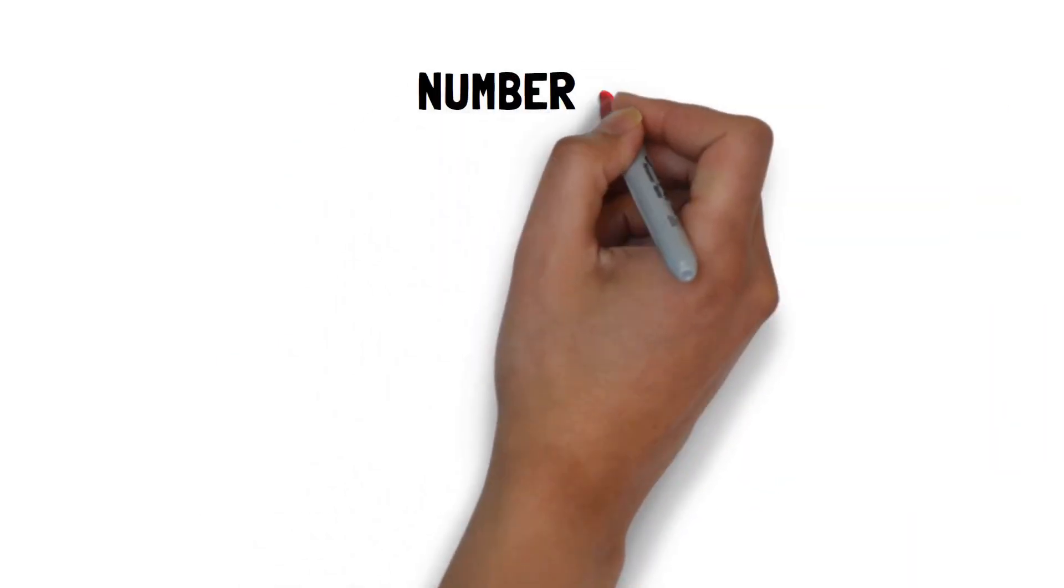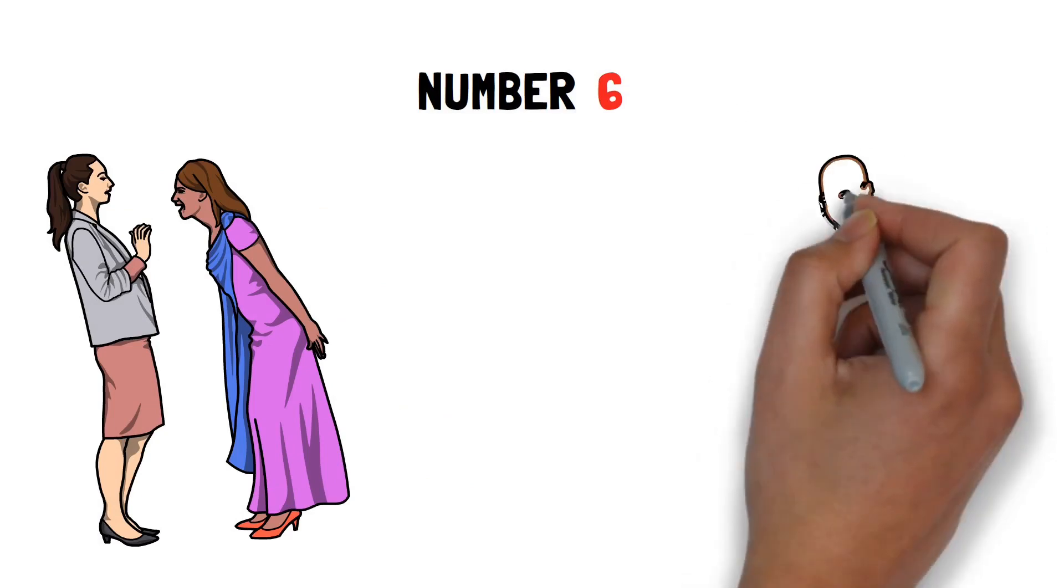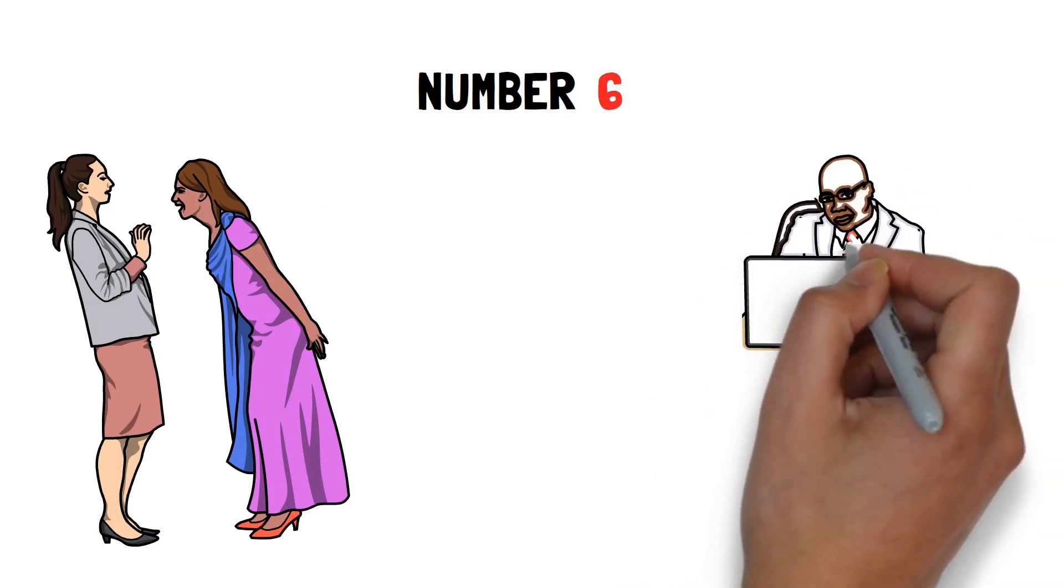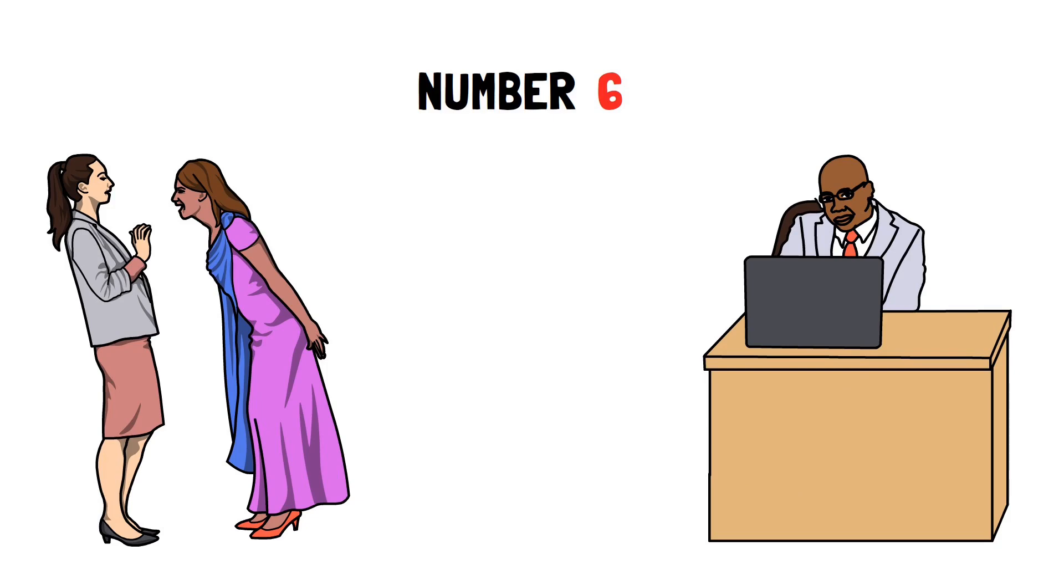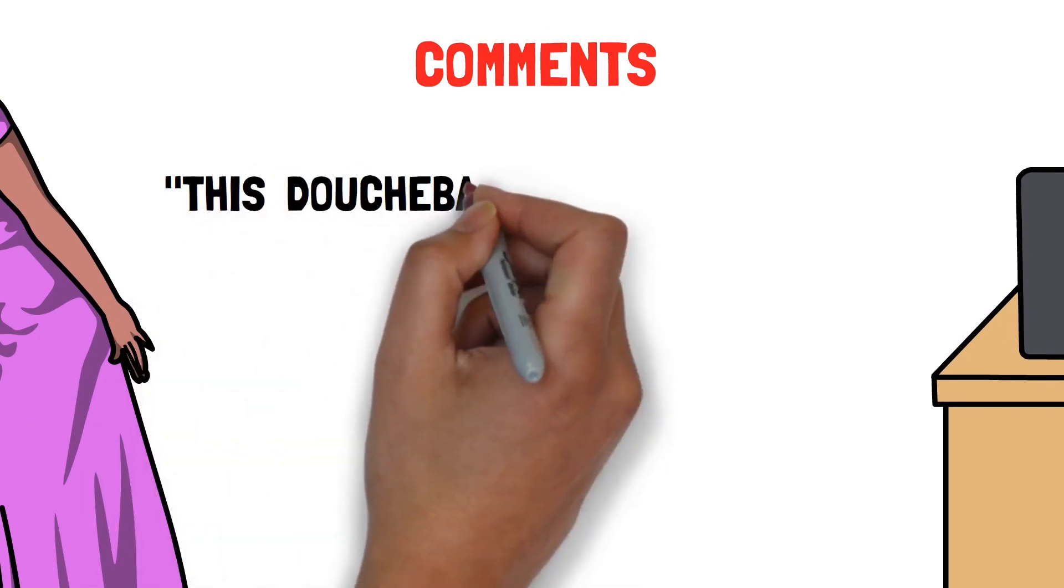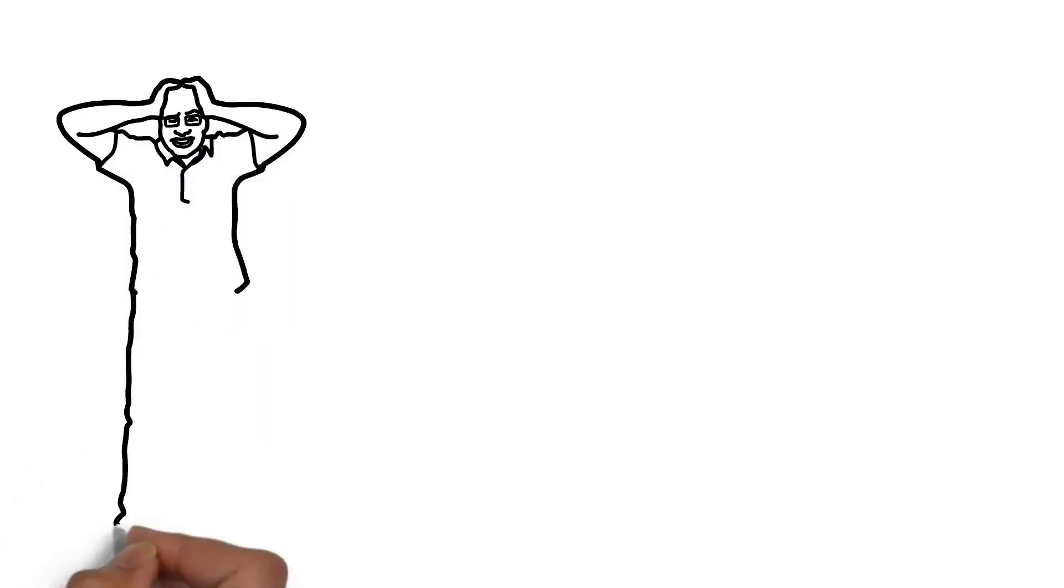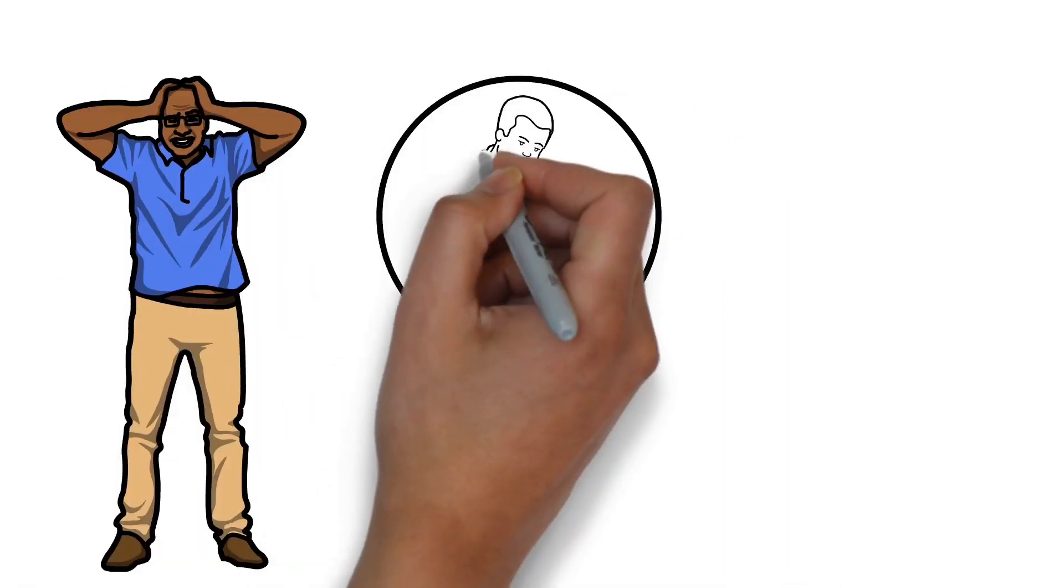Number six. Poor people resent rich and successful people. I was watching an interview with a successful and well-known entrepreneur the other day. Then I scrolled down to read some of the comments and a lot of people were like, this douchebag doesn't deserve to be on this channel. He is a scumbag. And it really freaked me out.